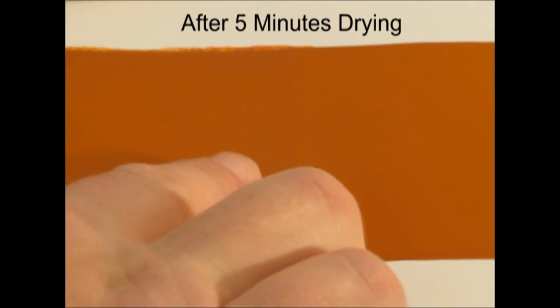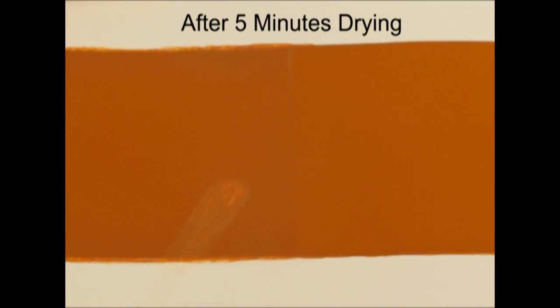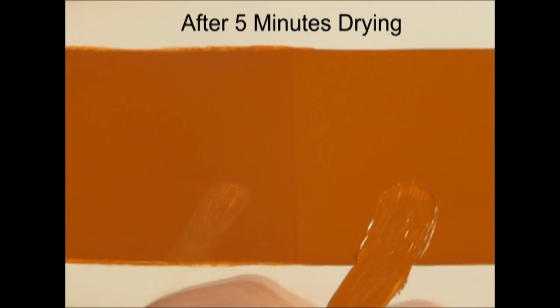Let's take a look at paint film thickness. This heavy body Mars Yellow is applied at two thicknesses onto a painted surface. After five minutes, we test the dryness level. The thinner section is nearly dry, yet the thicker area remains quite workable.